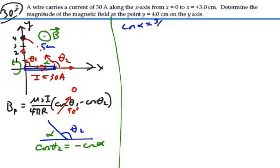Looking at the three, four, five triangle, hence the cosine of theta two is going to be equal to negative three-fifths, the negative of the cosine of alpha.